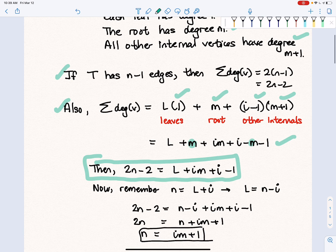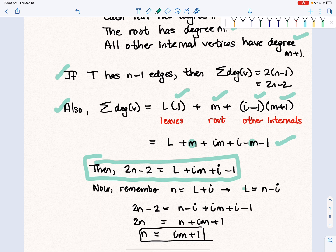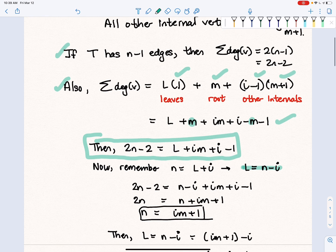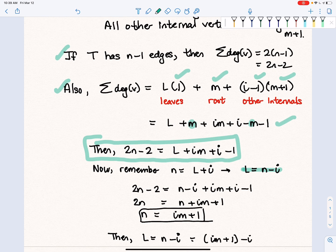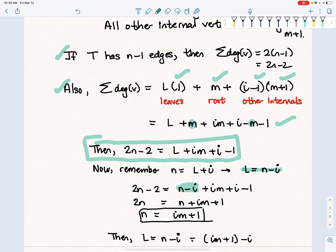Now remember, every vertex is either a leaf or an internal vertex, which means if you add L and I, you get N. So that means L is equal to N minus I. Substituting that into the formula, we have 2N minus 2 equal to N minus I plus IM plus I minus 1.